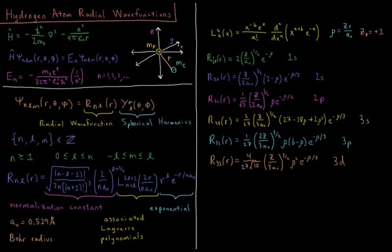So r10, n equals one, l equals zero, is equal to our normalization constant, 2z over a0 to the three halves, then e to the minus rho. So that's just a purely decaying exponential. This is the radial part of our 1s orbital, 1s function.